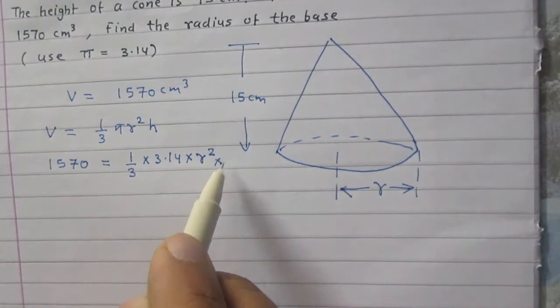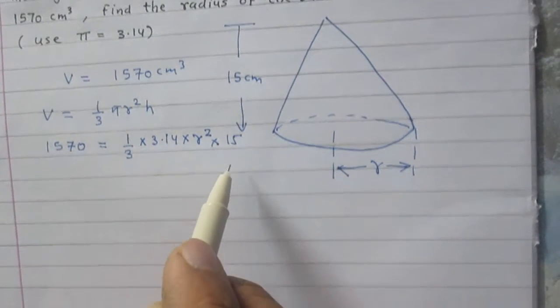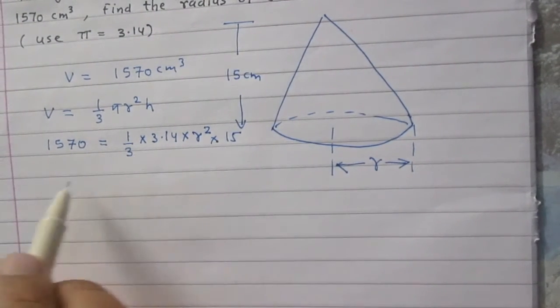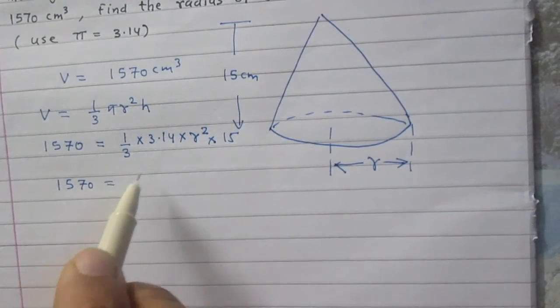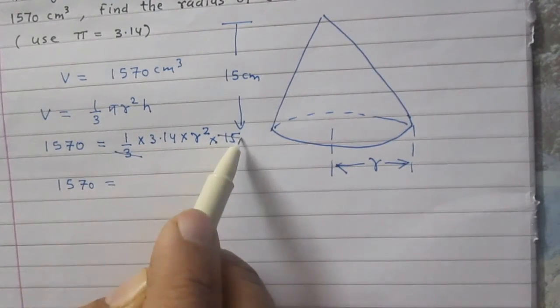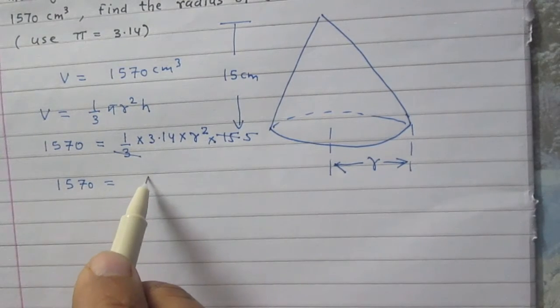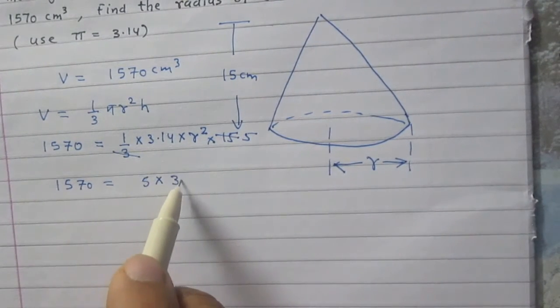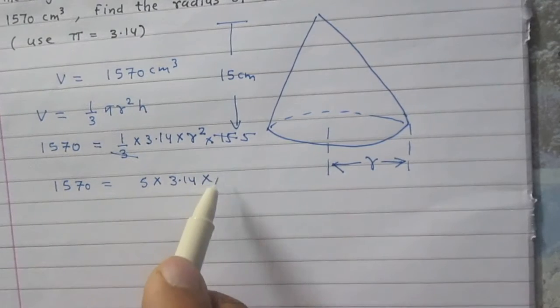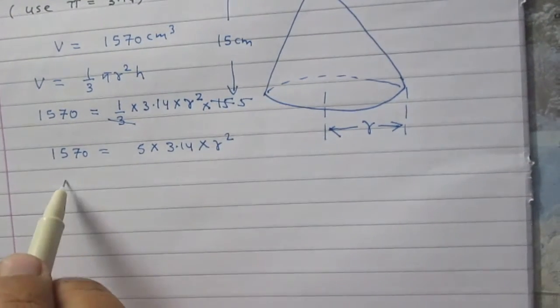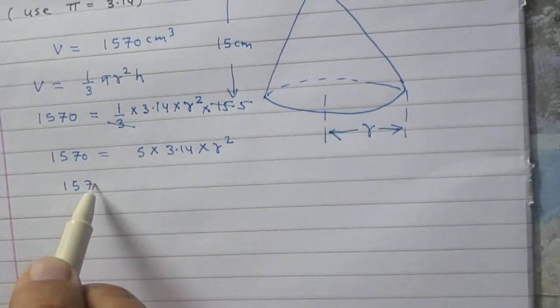We can simplify: 3 divides into 15, so we get 5 × 3.14 × r². We can write 3.14 as 314/100.